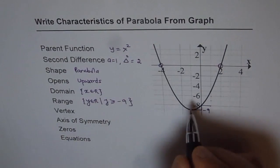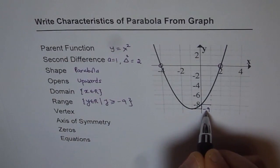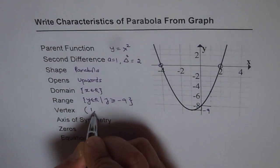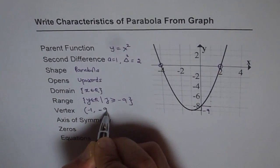Position of vertex is right there. At minus 1, the value is minus 9. So we can write this as (minus 1, minus 9).